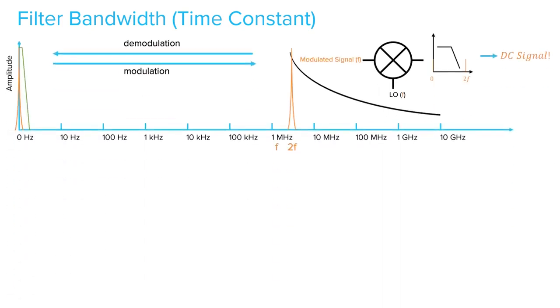Recall, the lock-in amplifier implements a low-pass filter immediately after the demodulation. And the corresponding time constant are related by this equation. The time constant is inversely proportional to the filter bandwidth.